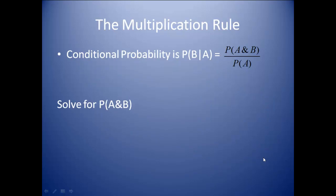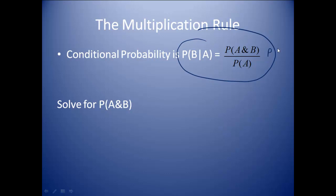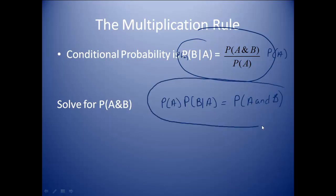The multiplication rule is what we're going to tackle next. When we have our conditional probability formula and solve it for the probability of A and B, we multiply both sides by the probability of A. What we're left with is: the probability of A times the probability of B given A equals the probability of A and B. That is the multiplication rule — the formula for finding the probability of A and B.